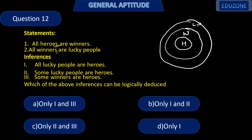Inference 1: All lucky people are heroes. We can see that these are all lucky people, and heroes are only a small portion of them. So all lucky people are not heroes — this inference is incorrect.